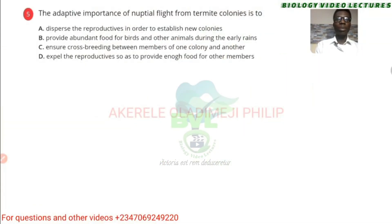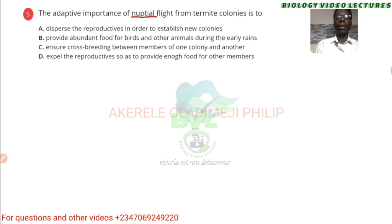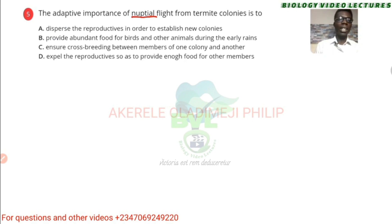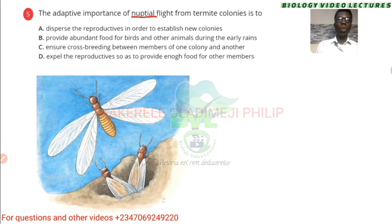The adaptive importance of nuptial flight from termite colonies — the first word you need to remember is the meaning of 'nuptial', which simply means something like a wedding, coming together. This is done by termites. It's not really a serious wedding, so to say, but it looks somewhat like that.